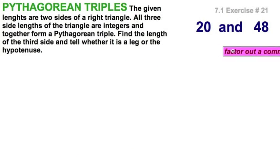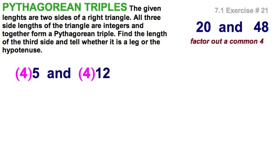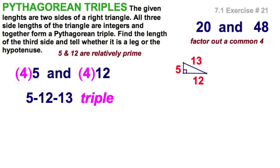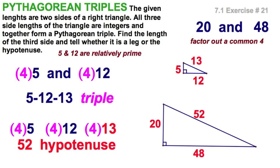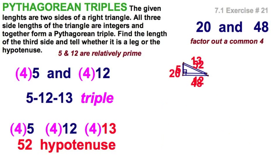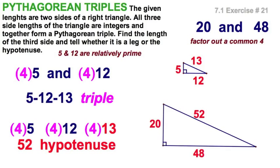Well, just like the last one, let's start by factoring out that common factor of 4. Well, that's going to give me 5 and 12. After all, 5 and 12 are relatively prime, just like the last example. So now, let's see what we've got here. Well, that's going to give me the ubiquitous 5, 12, 13 Pythagorean triple. And, let's see, that's simple enough. I guess what we're missing is the 13, and 4 times 13 is 52. So the missing side is actually 52, and it is a hypotenuse.